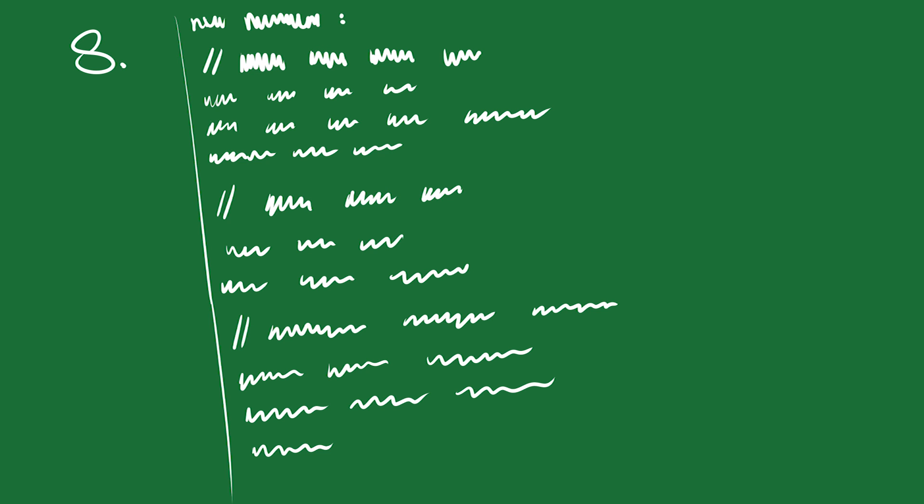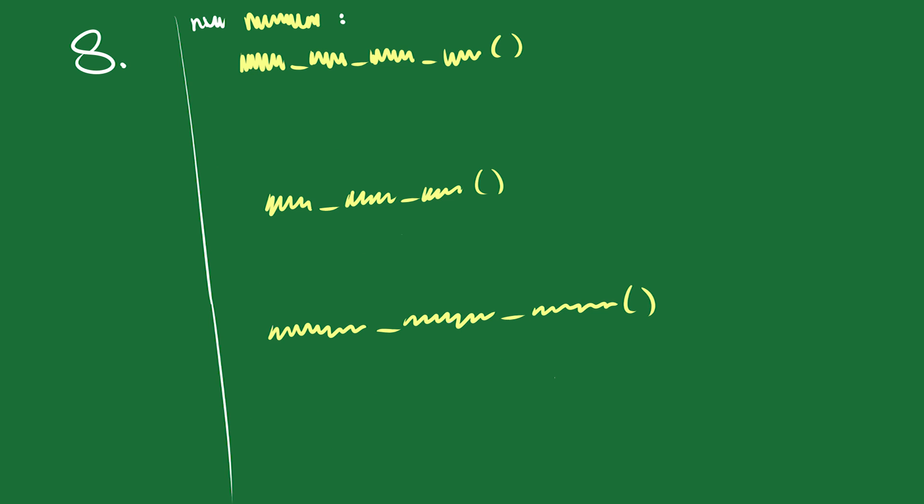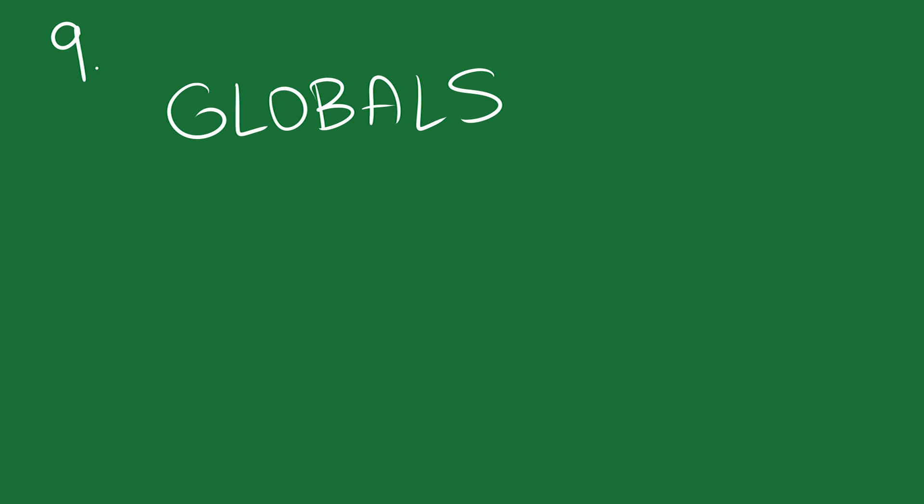8. If you find yourself separating a large function into segments and writing comments to label each of those segments, consider turning those segments into named functions. In some languages, you can even scope these functions so that they never leave the function you were in in the first place. 9. Globals are the enemy. Never forget.